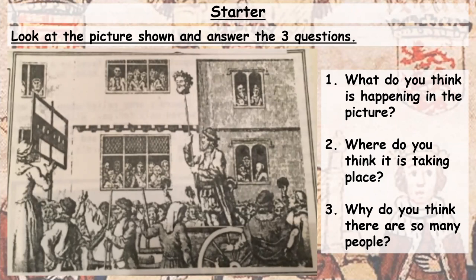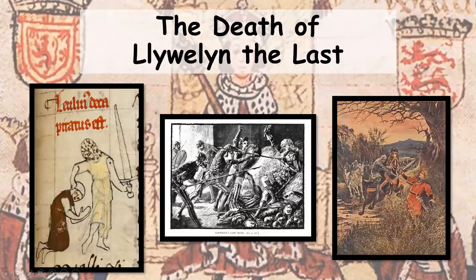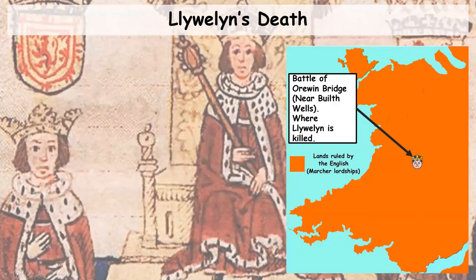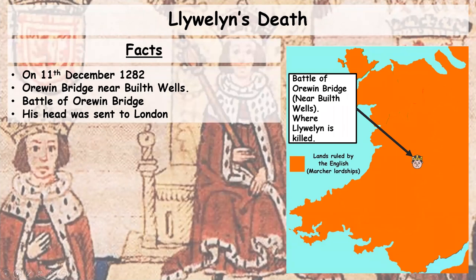We should be back now from finishing answering those questions, so we're going to move on. This lesson should be about the death of Llewellyn the Last. You can see here three different pictures showing his death. Here's the map from the end of last lesson showing the Battle of Orewin Bridge to the place where Llewellyn was killed. The facts we know: his death occurred on the 11th of December 1282.